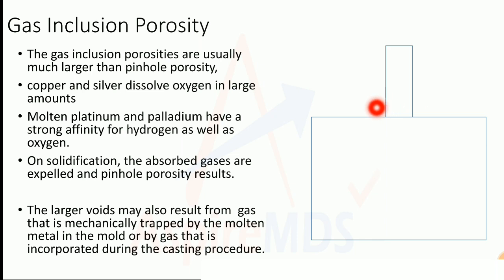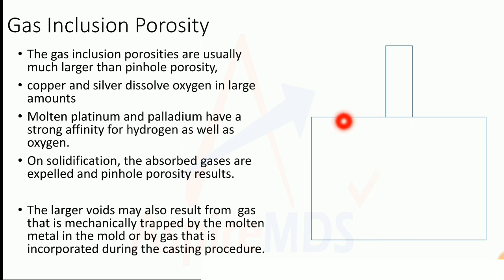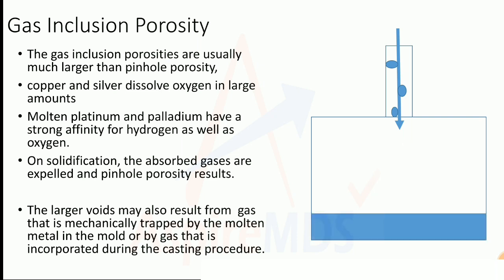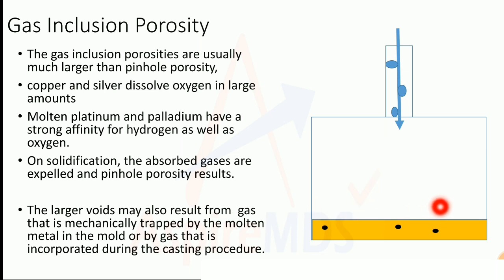Gas inclusion porosity is similar to pinpoint porosity but the voids are larger. In addition to silver dissolving oxygen, copper also dissolves oxygen, and platinum and palladium have a strong affinity for both hydrogen and oxygen. When these metals solidify, the dissolved gases are expelled, leading to porosity. This can also occur when metal is flowed into the pattern carrying gas, which is expelled upon solidification.